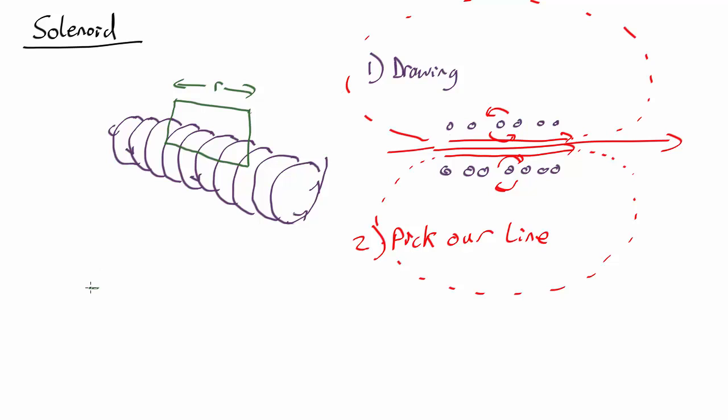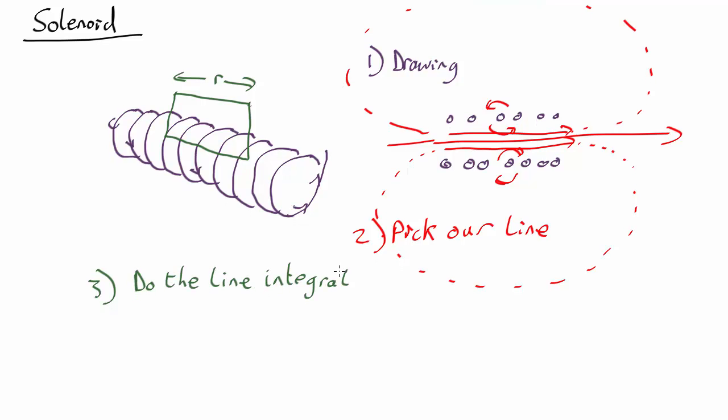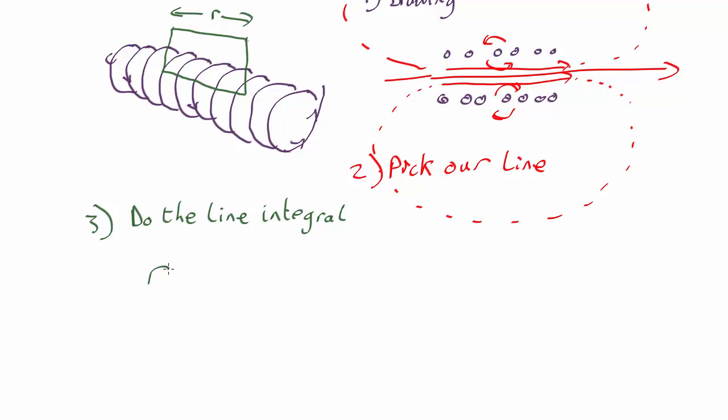So then we get to step three: do the line integral. The line integral is the sum over that surface of the magnetic field vectors dot the line elements dl, and that's going to be equal to μ₀ times the sum of the current inside.